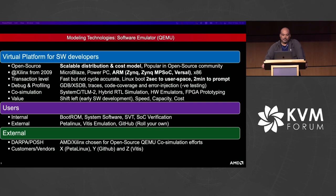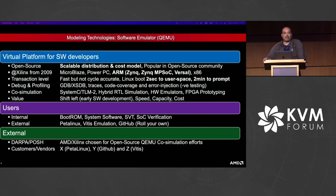QEMU is a transaction-level emulator — very fast but not cycle accurate. It can boot ARM platforms into user space in just a couple of seconds and reach a full login prompt in about a minute. It has tons of debugging and profiling features and a co-simulation framework that is SystemC-based, allowing hybrid co-simulation setups using QEMU with RTL simulation, hardware emulators, and FPGA prototyping.